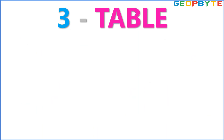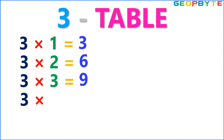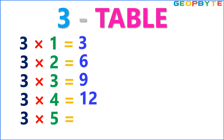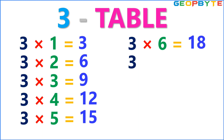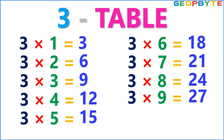Now let us see the 3 table. 3 1s are 3. 3 2s are 6. 3 3s are 9. 3 4s are 12. 3 5s are 15. 3 6s are 18. 3 7s are 21. 3 8s are 24. 3 9s are 27. 3 10s are 30.